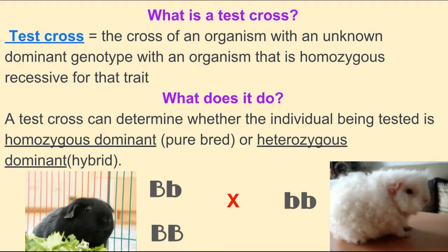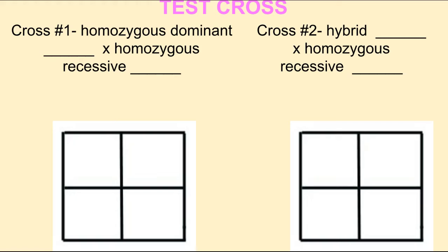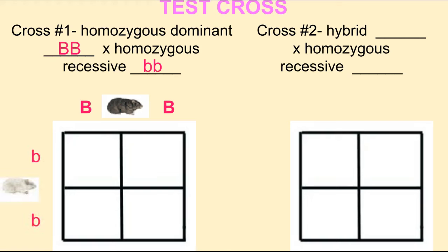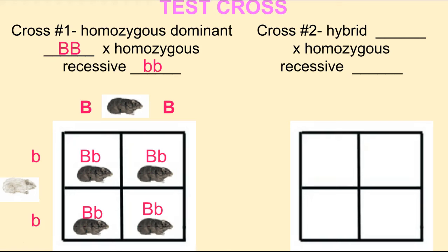Let's do this on a Punnett Square. When doing a test cross Punnett Square, you always use two Punnett Squares — you do two crosses. Cross one: take the homozygous dominant for the trait, in this case capital B capital B, and cross it with the homozygous recessive. With our black guinea pig as possibly homozygous dominant crossed with the white guinea pig, one hundred percent of the offspring from this cross would be black, or heterozygous for the black trait.